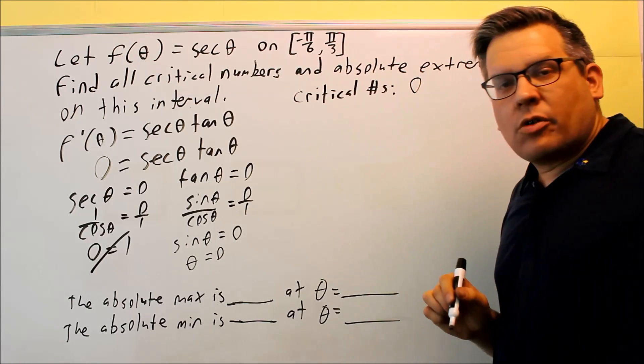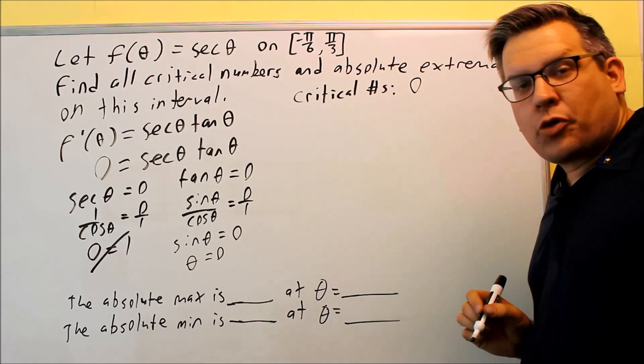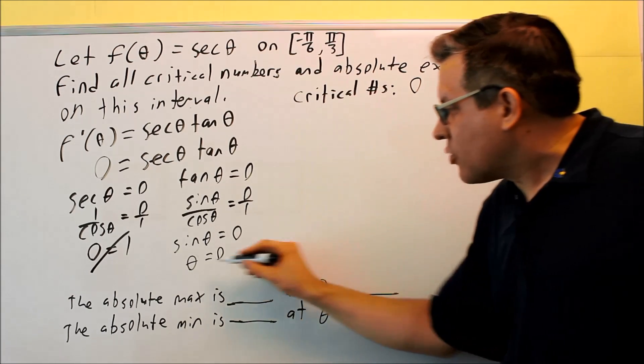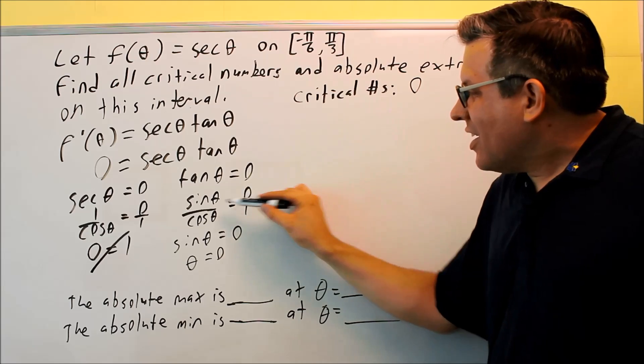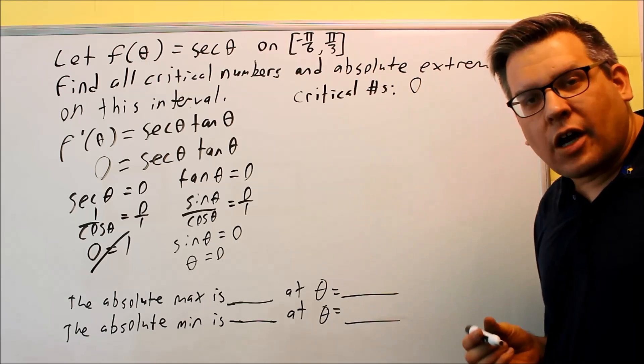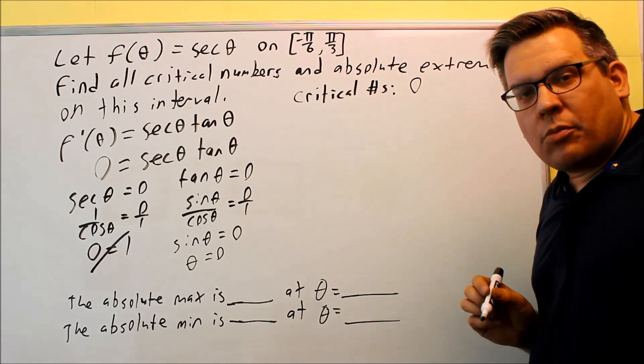So the critical number here, the only one I have, there's only one critical number on this problem. It's going to occur at zero because that's where the derivative equals zero. If this top part is zero, the whole thing is zero, and I know tangent of zero is zero if I check that on my calculator. That's my only critical number.